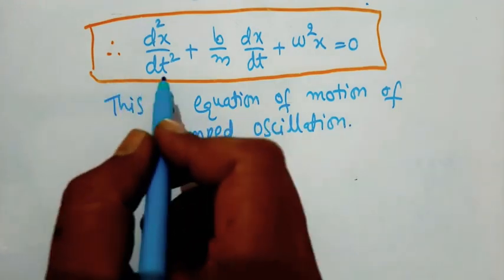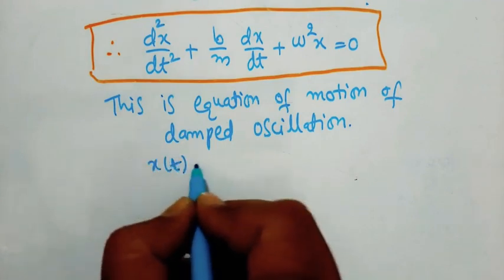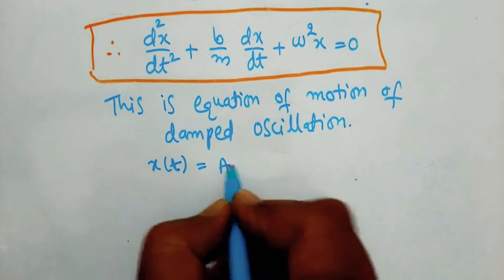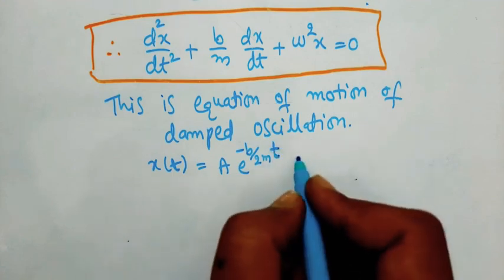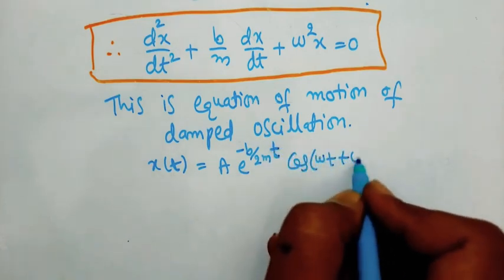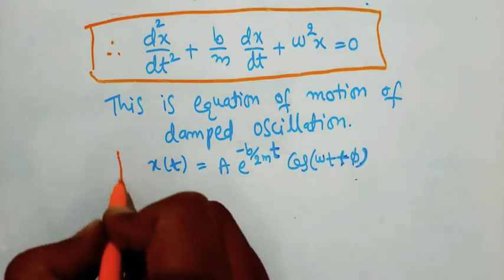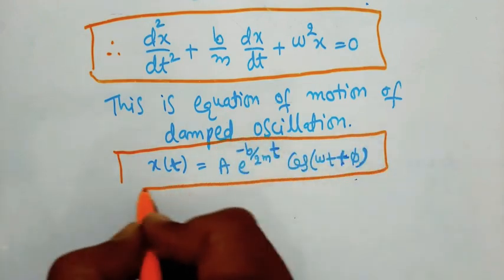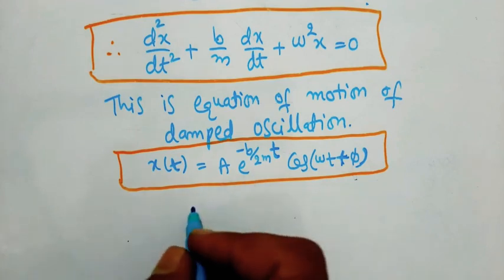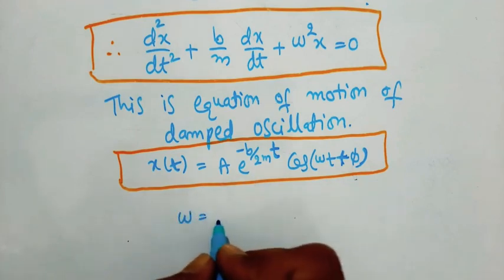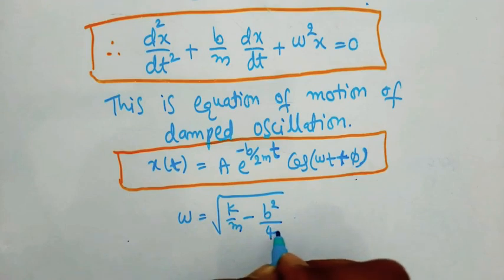We have a solution of this equation. That is x(t) equals A times e to the power of minus B by 2M into t, times cos(omega t plus phi). Here omega is equal to the square root of k/M minus B² by 4M².